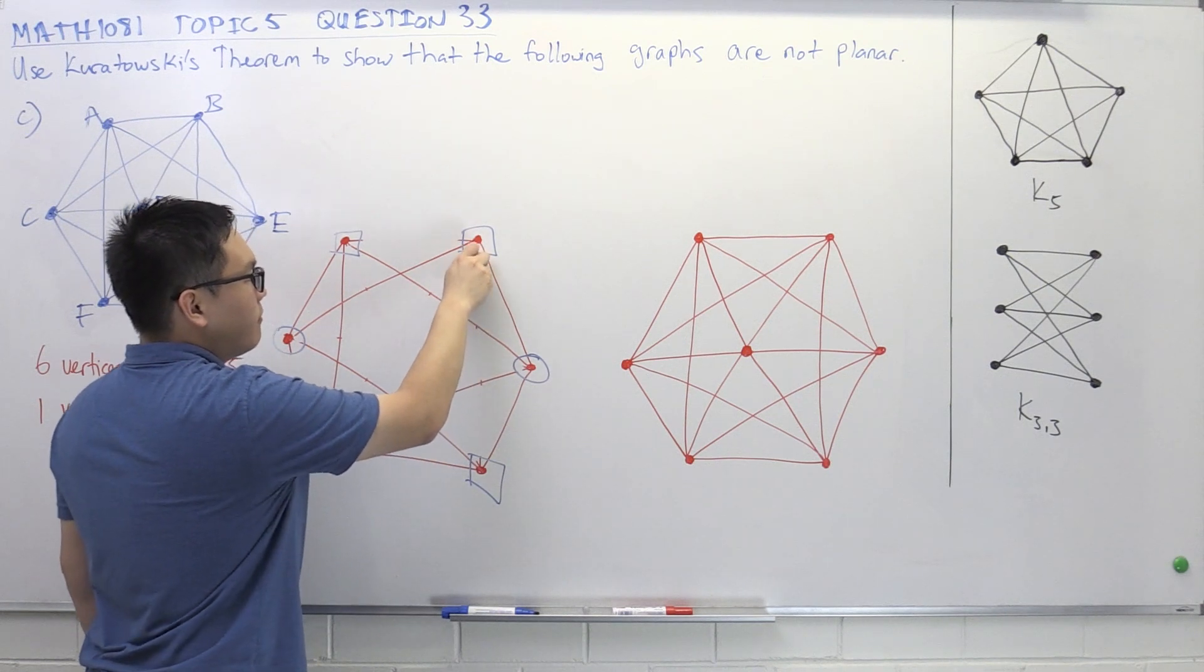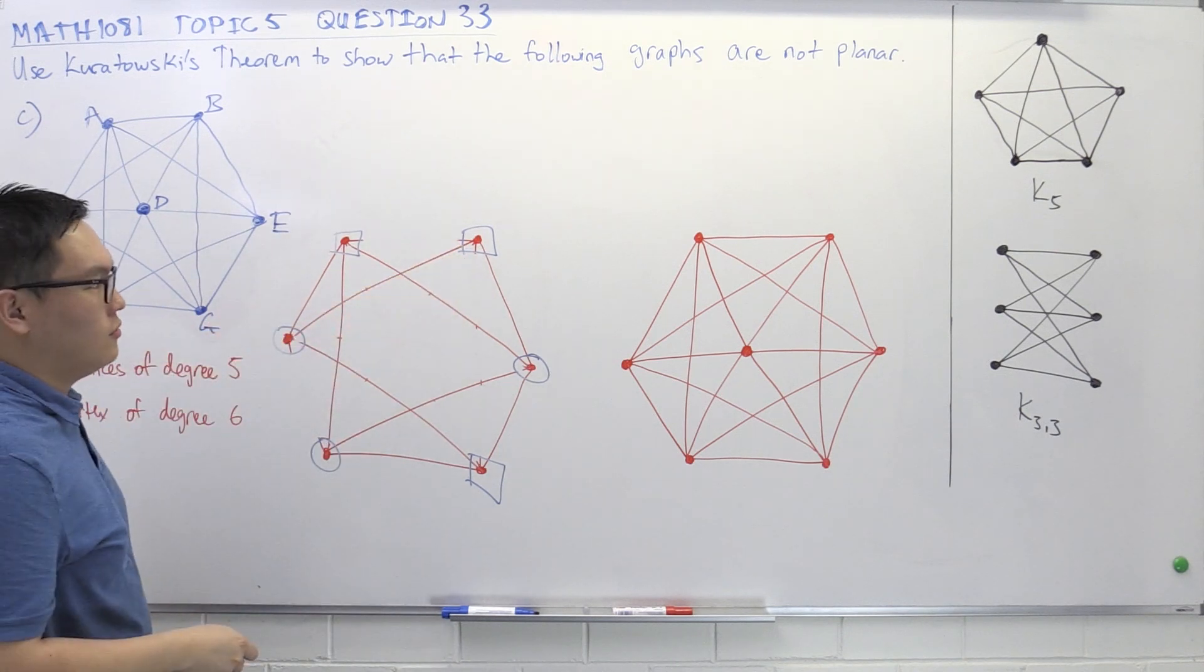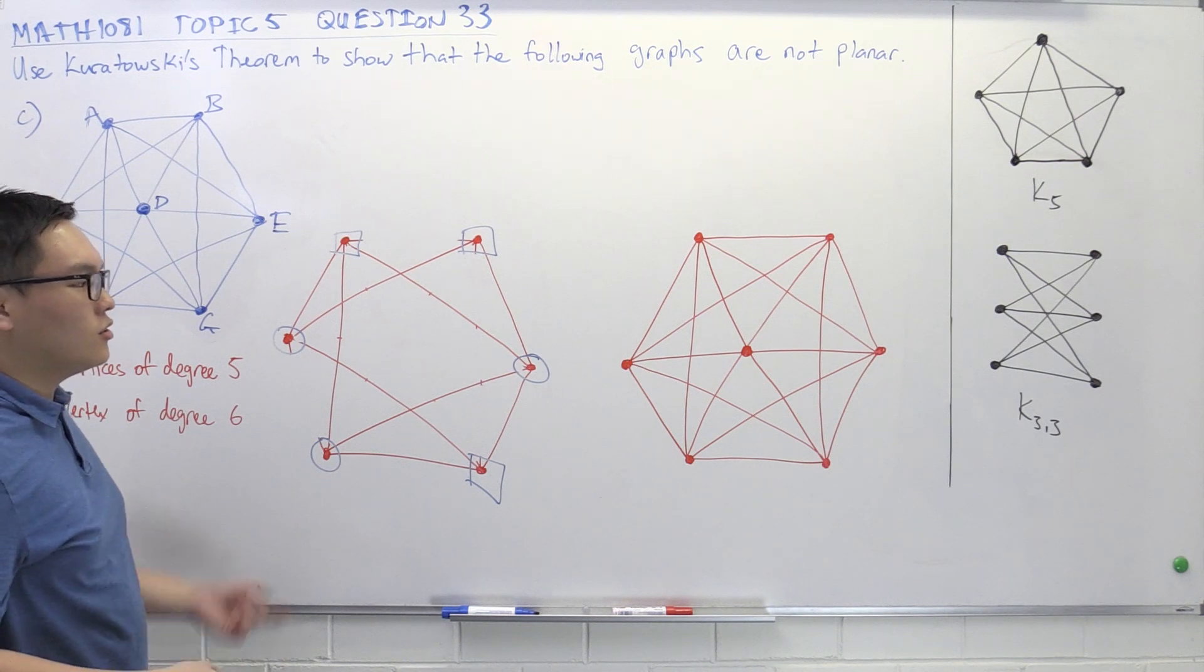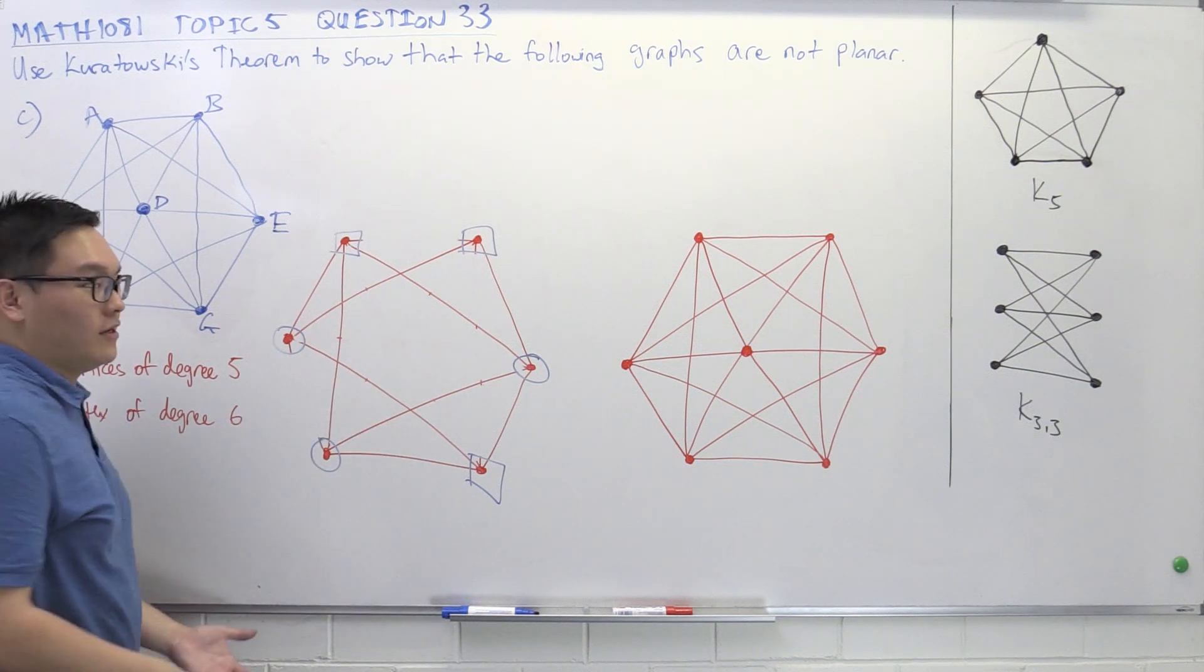But look at what we have left. So we now have this vertex of degree 2. So we removed too many edges, so there's no way this is going to end up being a K33. So now we know that removing the middle vertex wasn't the trick.